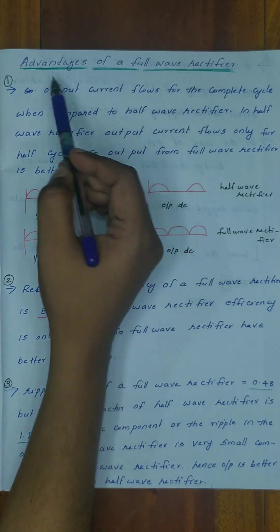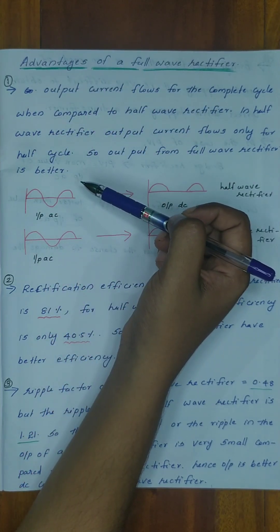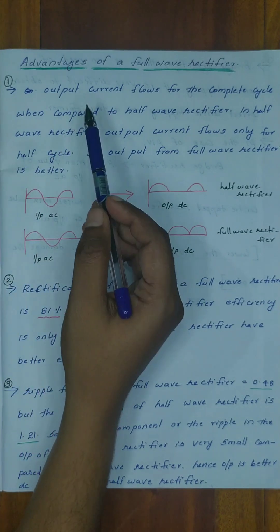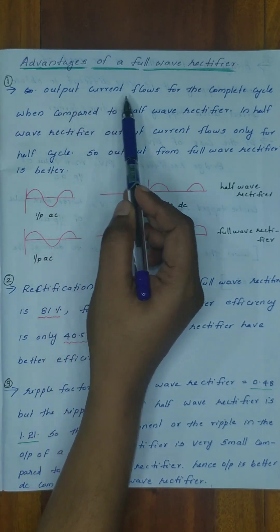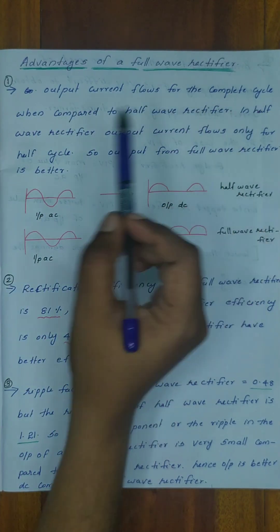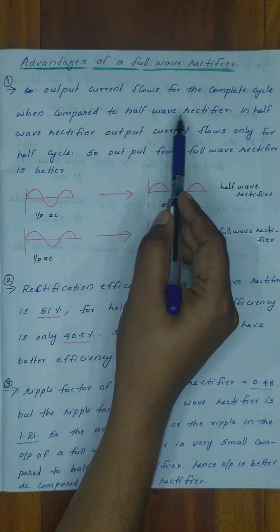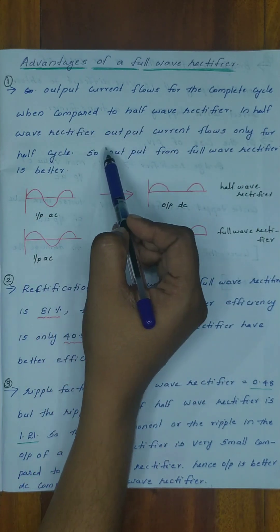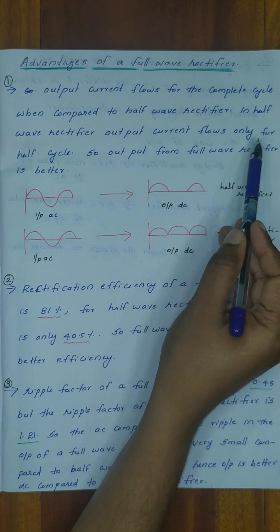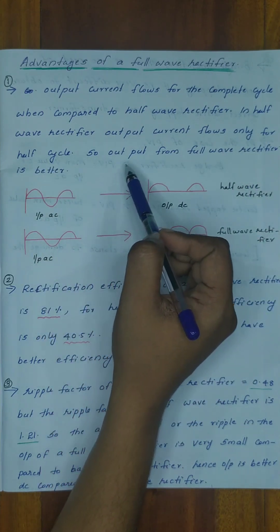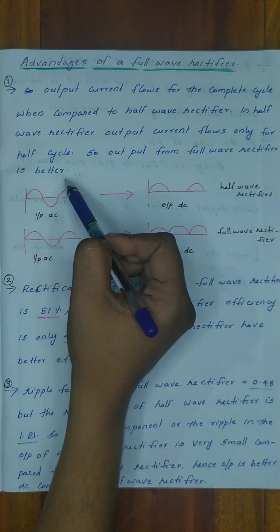What are the advantages of a full wave rectifier? The first advantage: output current flows for the complete cycle when compared to the half wave rectifier. In a half wave rectifier, output current flows only for half a cycle. So the output from a full wave rectifier is better.